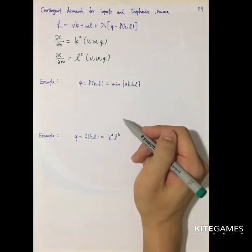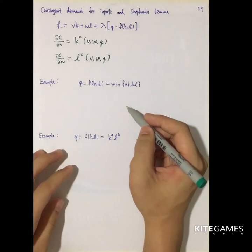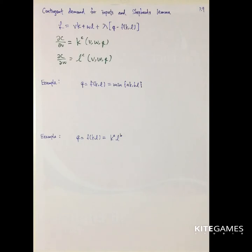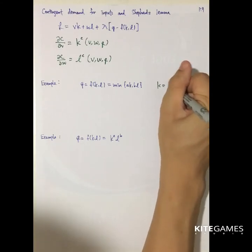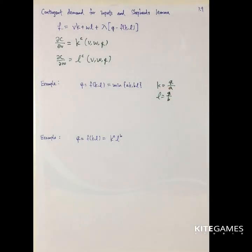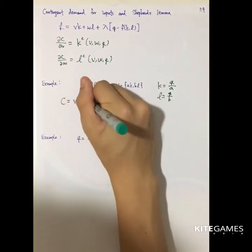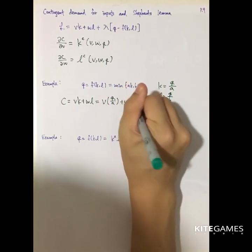I will use two examples to show this is true. First is the Leontief production function. In the Leontief production function, K and L are at the corners, so K is equal to Q over A and L is equal to Q over B at the optimal. The cost function is just VK plus WL, which equals V times Q over A plus W times Q over B.